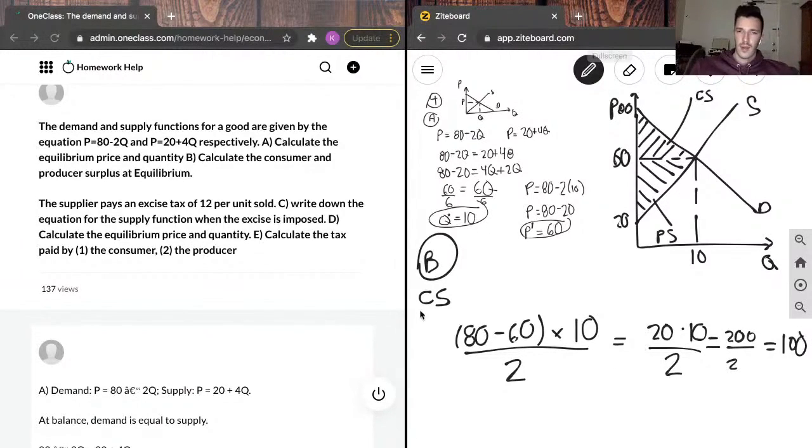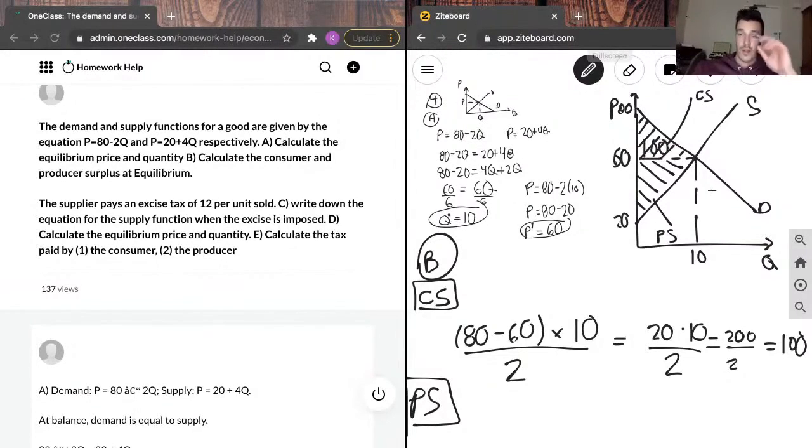So, I will check in a second with what our junior tutor said to make sure I'm doing this right because I'm just doing it off the top of my head. But I believe I'm on the right path so far. So, the area in here is going to be 100, and that's our consumer surplus. Our producer surplus, on the other hand, is represented by this triangle here.